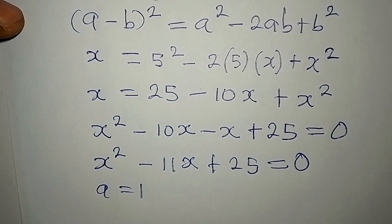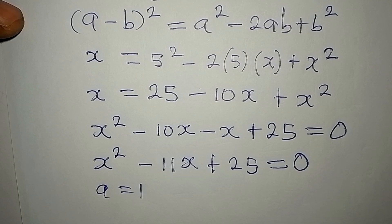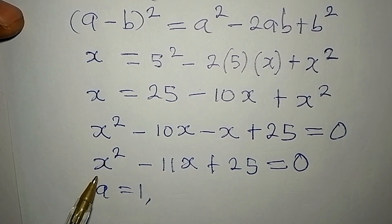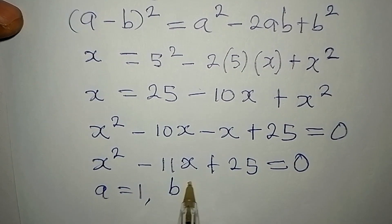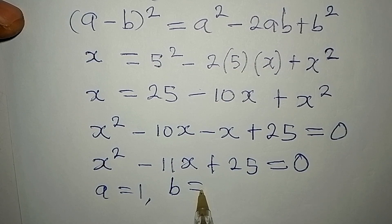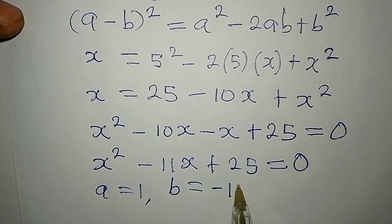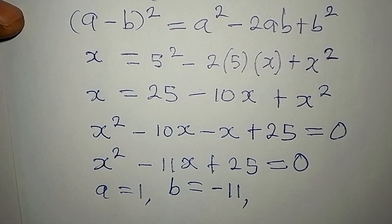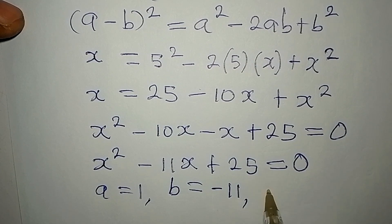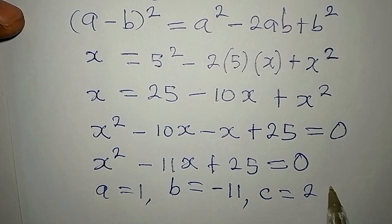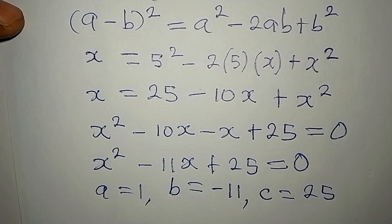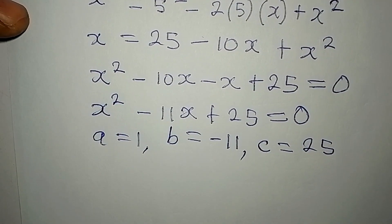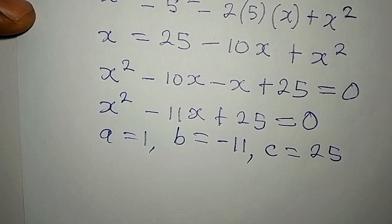Now our a is equal to one because we're going to use the formula method. Our a is one, that is the coefficient of x squared. Our b is negative 11, the coefficient of x, and our c is equal to 25. Right, now let's continue from here.